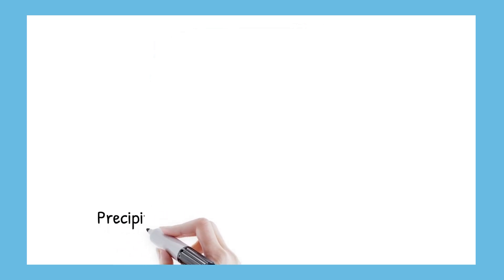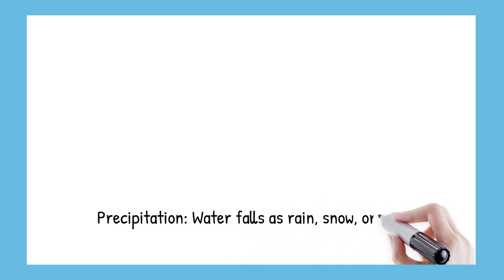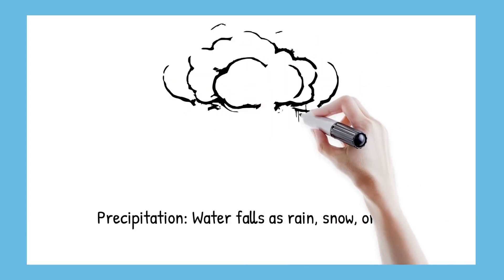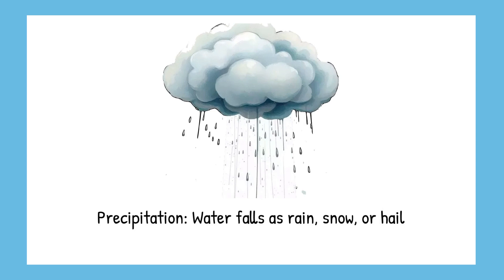When the clouds get too heavy with water droplets, they fall back down as rain, snow, or hail. This step is called precipitation.